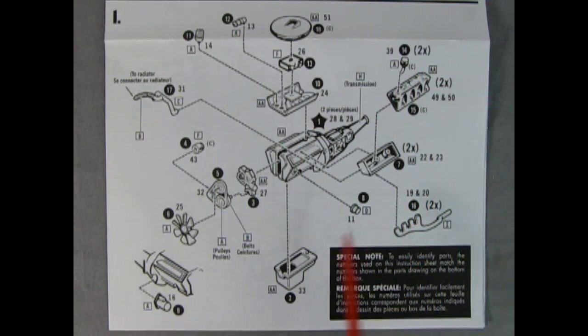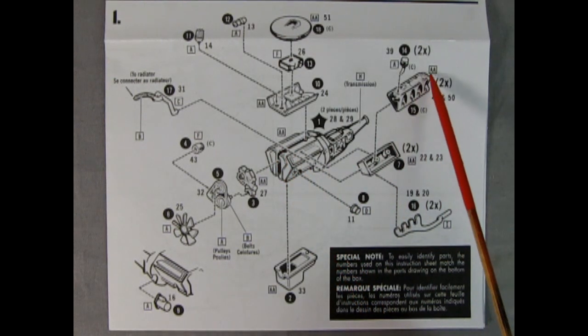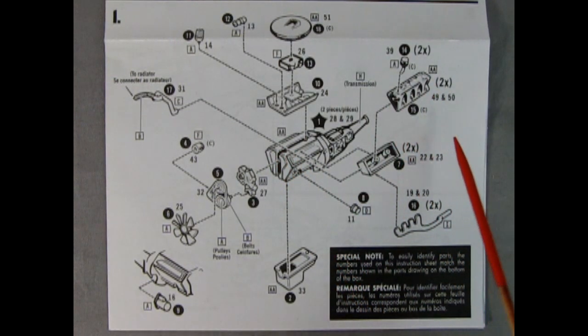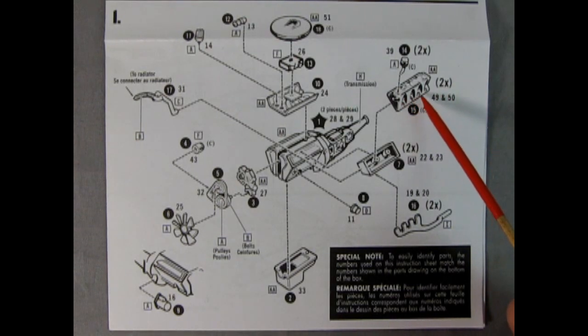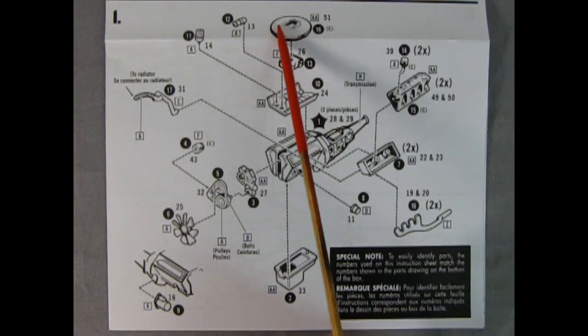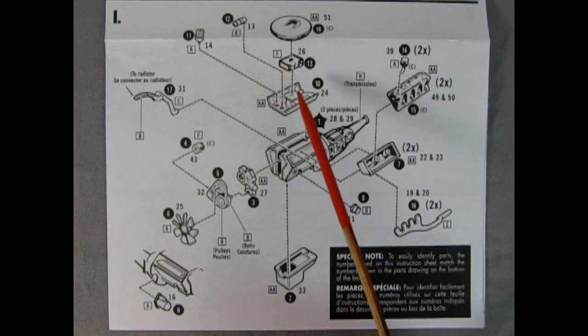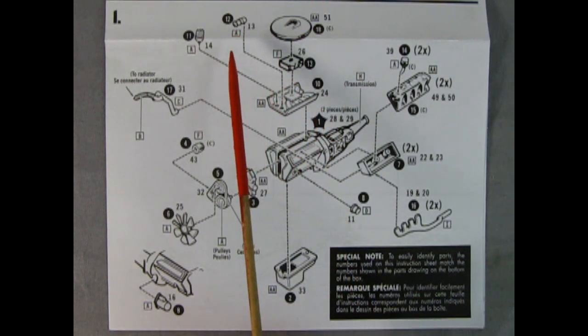So here we have a multi-piece engine, which looks fantastic, actually. It says, special note, to easily identify parts, the numbers used on this instruction sheet match the numbers shown in the parts drawings on the bottom of the box. So again, really nice there that we've got that notification. So here we have the left and right hand side of the engine with the transmission molded in place. Then we have our cylinder heads, which glue into place here, and then the cylinder valve covers, really. And these ones have the deep spark plugs going down there. We also have an oil breather cap up top. And then here we've got our air cleaner, our carburetor, and our intake manifold. We also have the coil and our distributor.